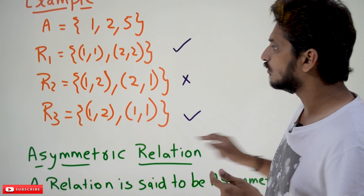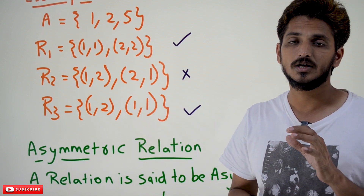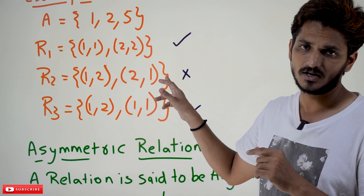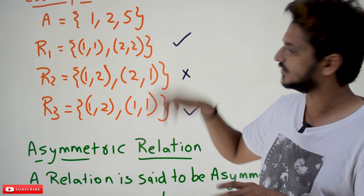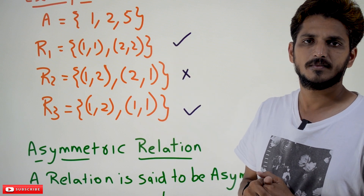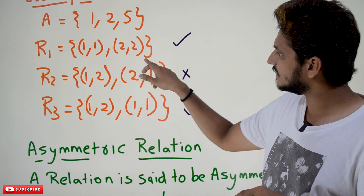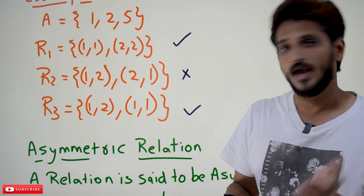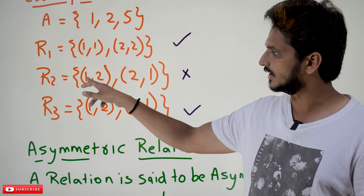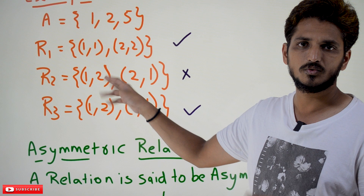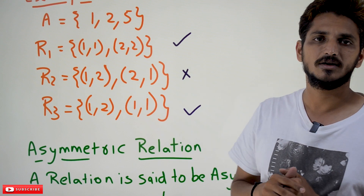Take the next example: {(1,2), (2,1)}. Is it an anti-symmetric relation? No, it is not. x relates y — (1,2) — and y relates x — (2,1) — both are present, so then x must equal y. But x equals 1 and y equals 2; they are not equal. So this is not an anti-symmetric relation.